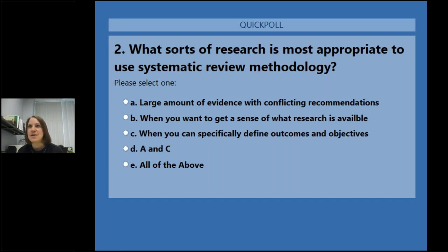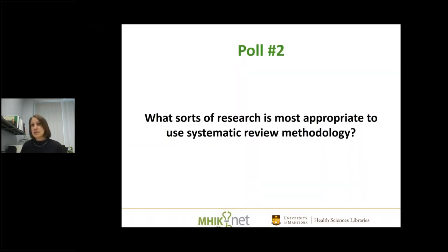For the poll on what sorts of research are most appropriate for systematic review methodology, the most correct answers are A and C: when there is a large amount of evidence with conflicting recommendations, and when you can specifically define outcomes and objectives. The option 'when you want to get a sense of what research is available' is not correct for a systematic review — that would be better suited to a scoping review or a general literature review. A systematic review is really about a specific patient or population, an intervention, a comparison, and an outcome.